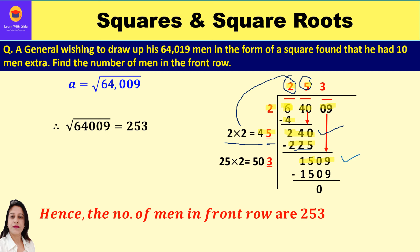For dividend 1509, take the current quotient 25 and double it: 25×2 = 50; leave a blank. Try digit 3, so 503×3 = 1509 exactly, remainder 0. Therefore the square root of 64009 is 253.